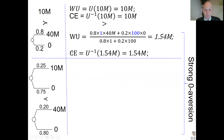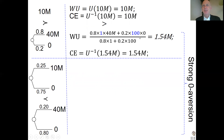This leads to strong zero aversion. The moment zero comes in, it gets a lot of attention, so you become much more negative about the whole lottery — a lot of aversion. That's what you see in the formula. It's nice to see how the mathematics and the psychology go together.